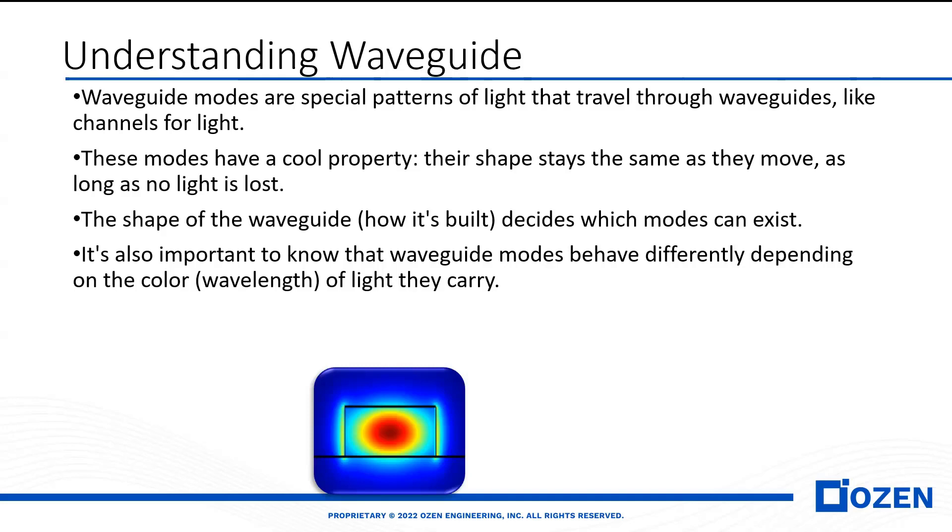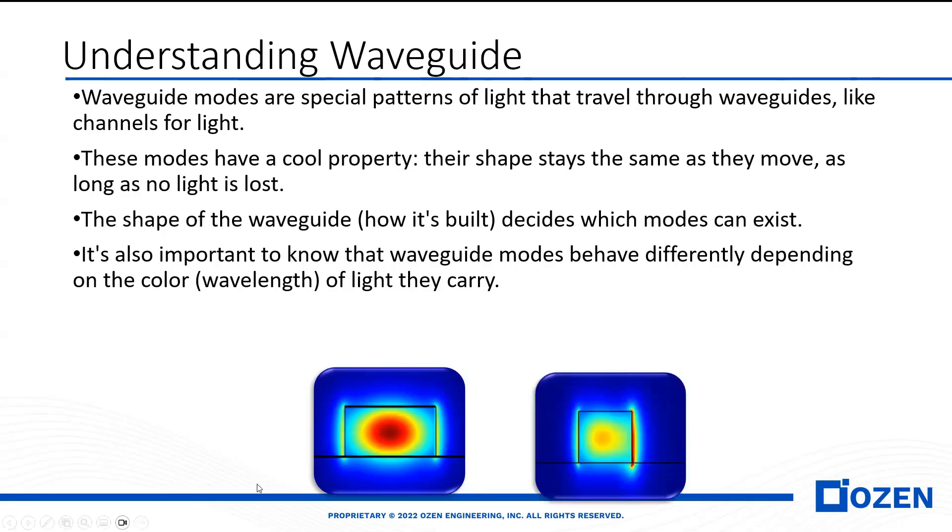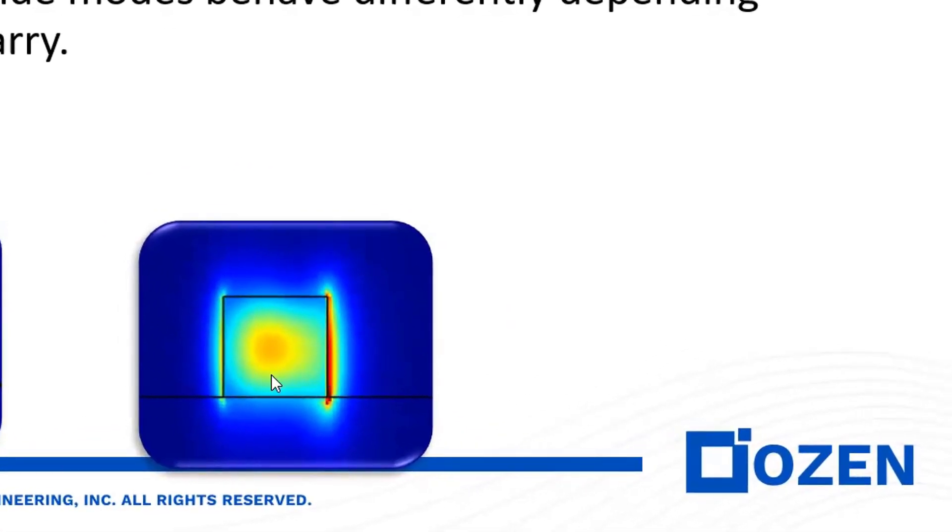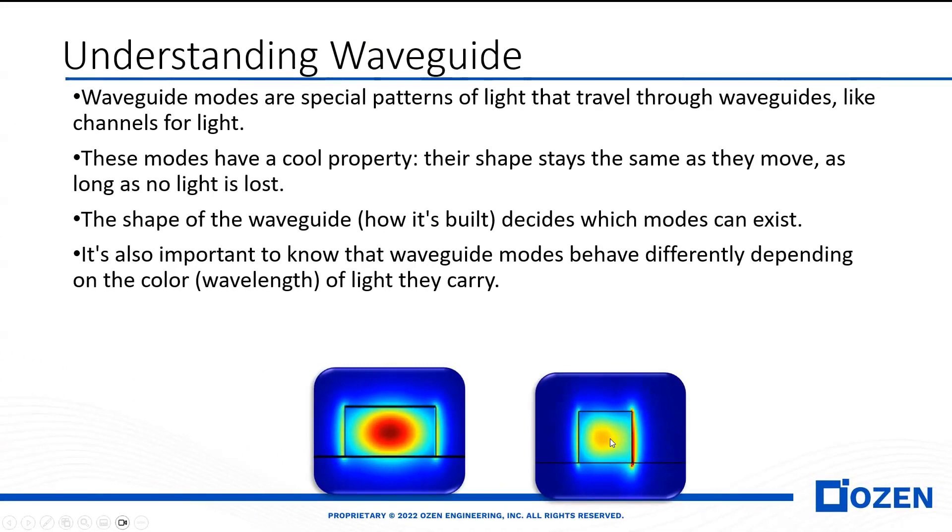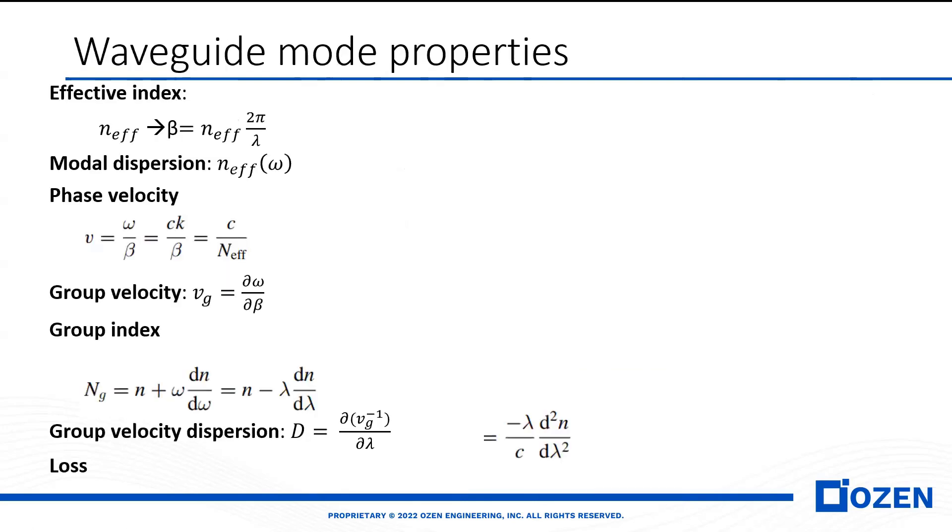These modes depend on the geometry of the waveguide and wavelengths. This is another example of a waveguide mode. As you see here, we bend the waveguide, and part of the light comes through this side. The shape of the mode changes by changing the geometry of the waveguide.